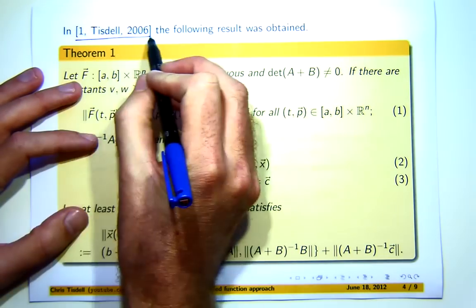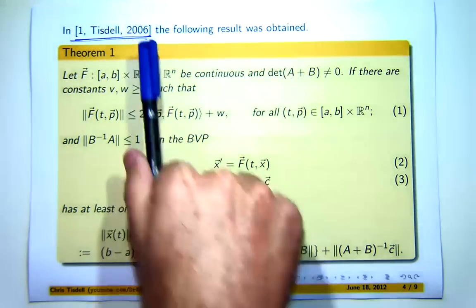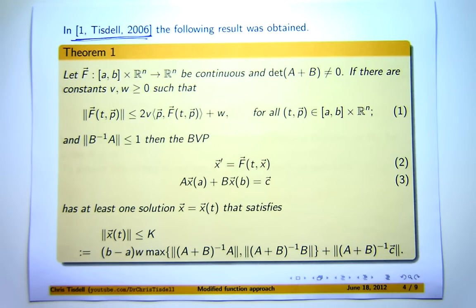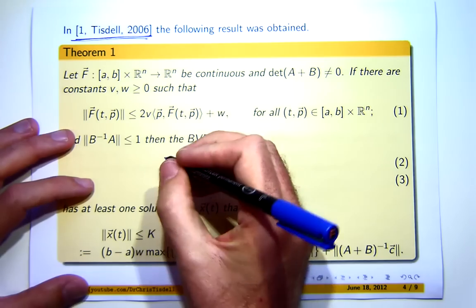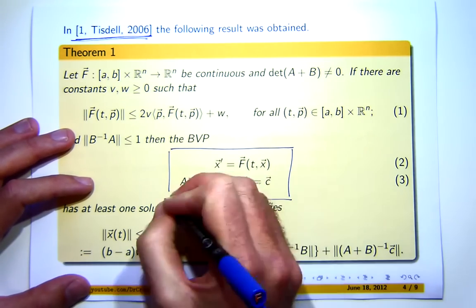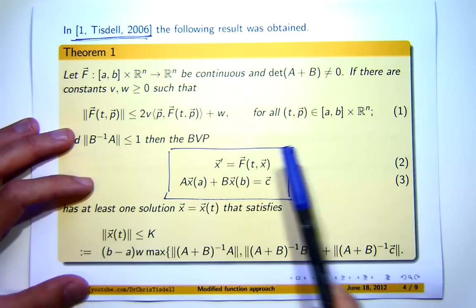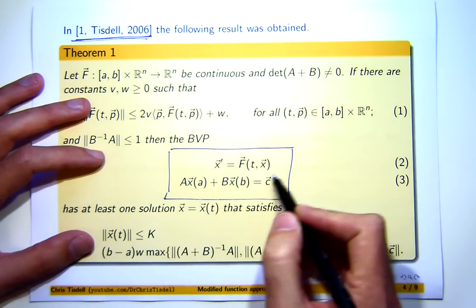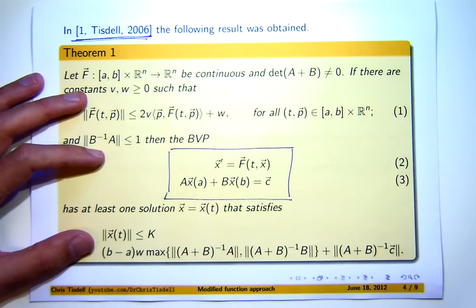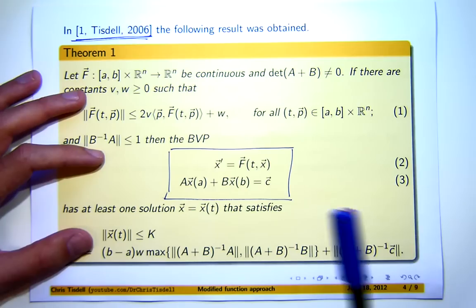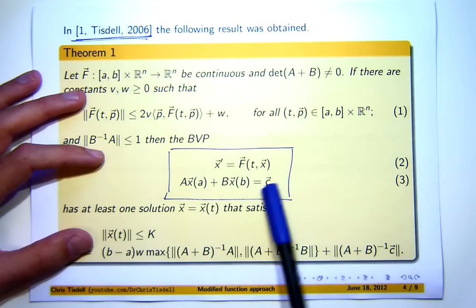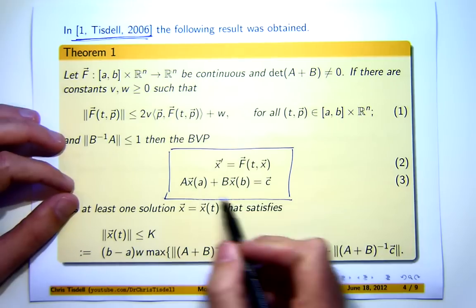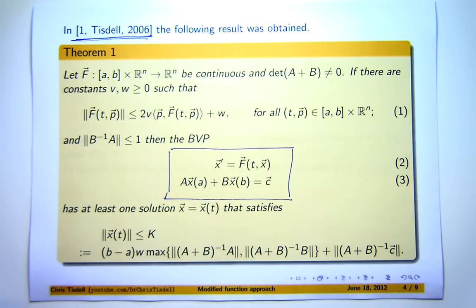Speaking of which, in 2006 I published a paper, I'll show you the details of this at the end, where I stated and proved the following result. Suppose I have a boundary value problem. Now the little arrow at the top of the letters means that it's a vector. So this is a first order, possibly non-linear system of differential equations and here we have some extra information known as some boundary conditions.